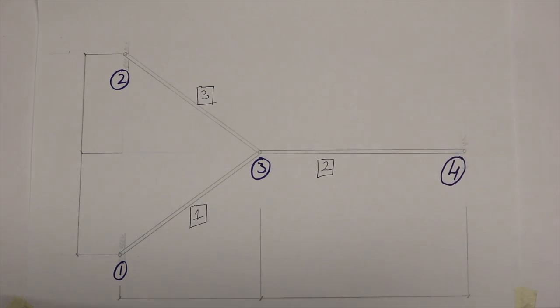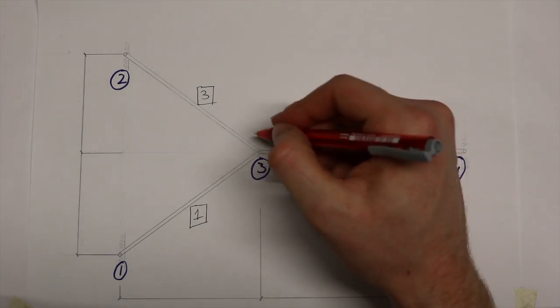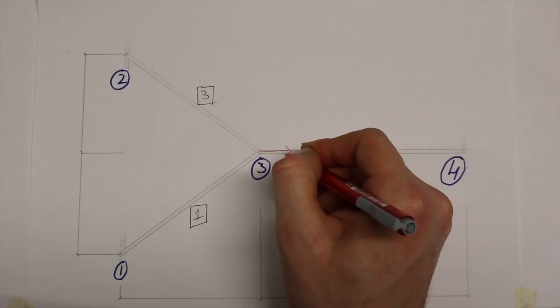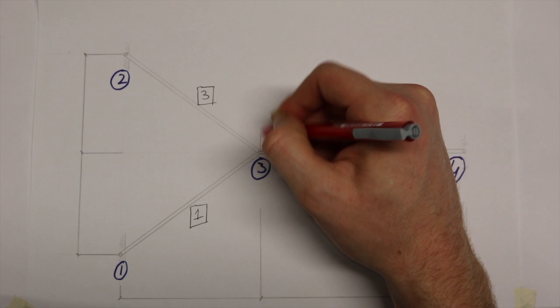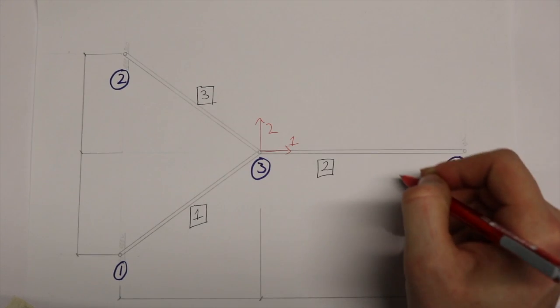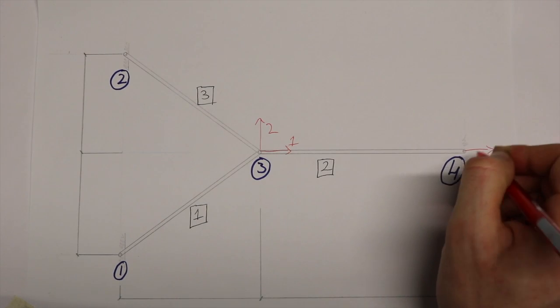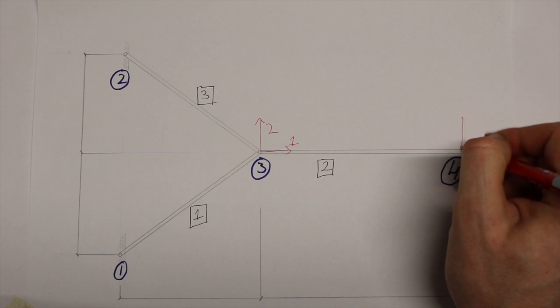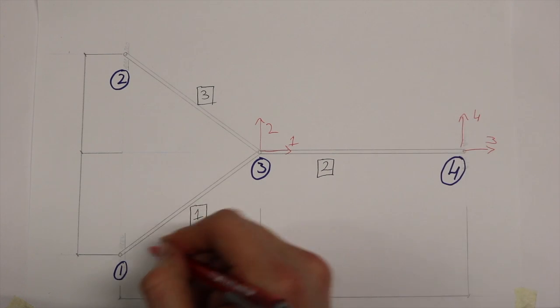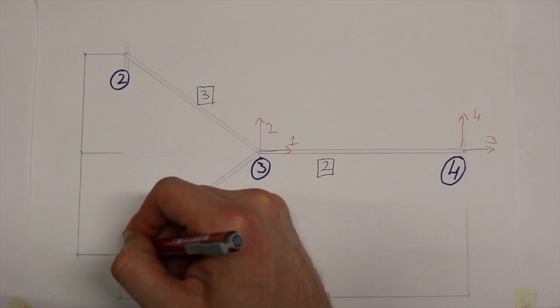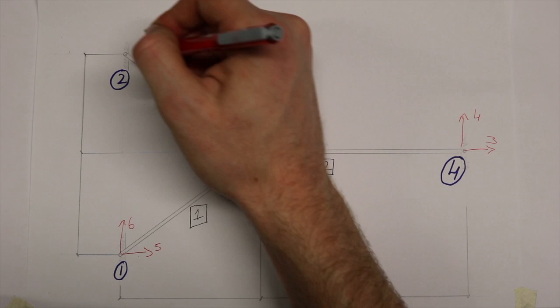Labeling the degrees of freedom now, we start with the only two unconstrained degrees of freedom at node 3, applying the label 1 and 2 in the global x and y directions. We know that we have four nodes, so therefore we must have eight degrees of freedom for the truss.